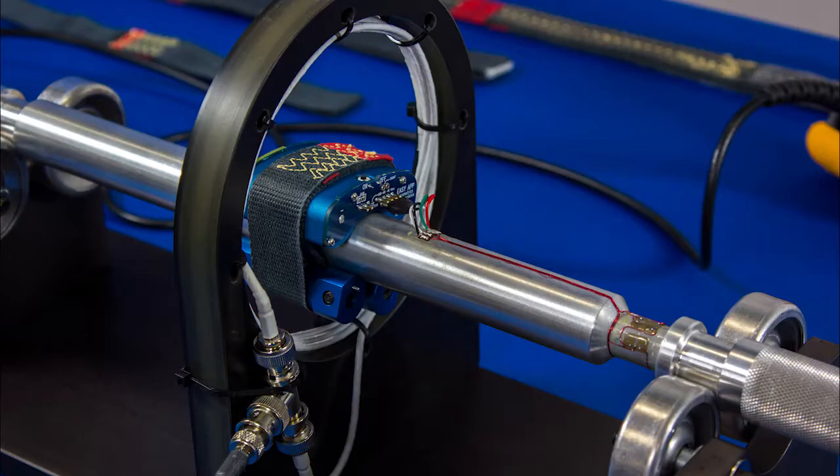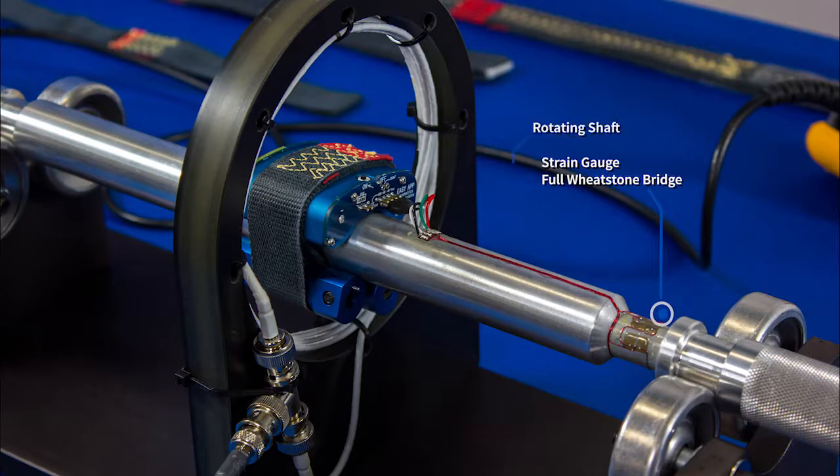Here, we will demonstrate the torque measurement from a strain gauge that is being transmitted wirelessly off of a rotating shaft using the AT5000 Easy App transmitter.